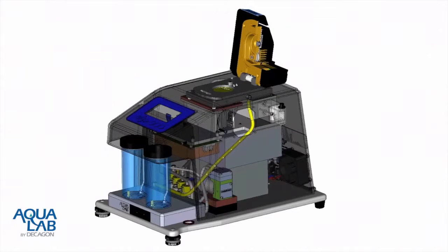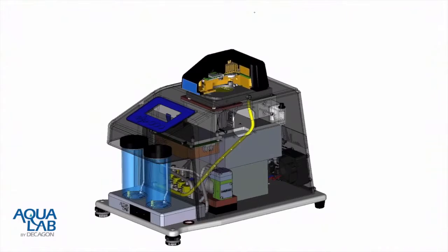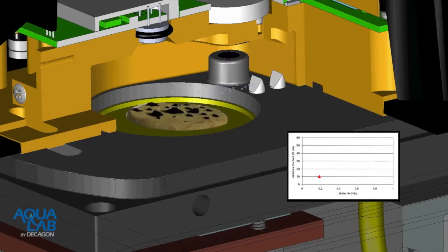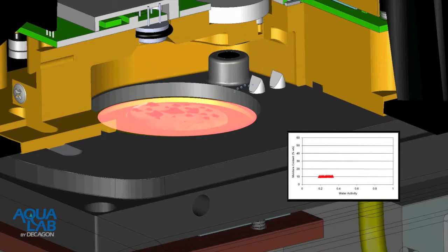The DDI method is a truly dynamic method and produces dynamic isotherms. For this method, instead of holding a sample at a given humidity until equilibration, the sample is exposed to saturated wet air for adsorption and desiccated dry air for desorption. As the sample dynamically takes up or loses moisture, the change in humidity is determined directly using a dew point sensor and the weight change is tracked with a precision balance.